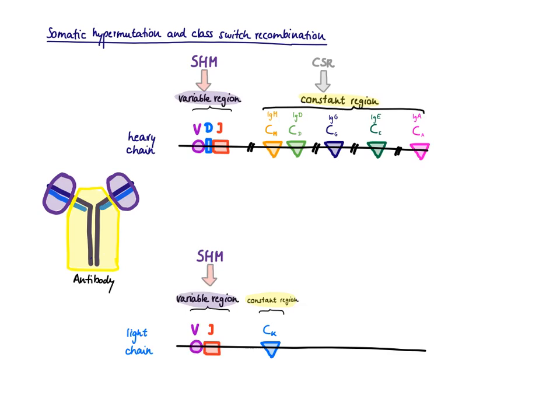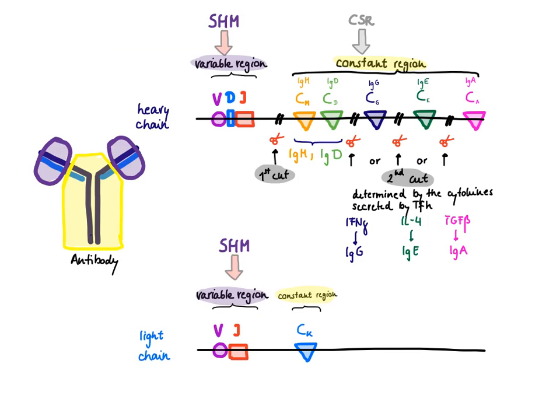A virgin B-cell is going to make the antibody class that is first in line. Here you can see the gene of the variable region of the heavy chain. The first in line is the mu and delta chain, so it's going to make IgM and IgD first.